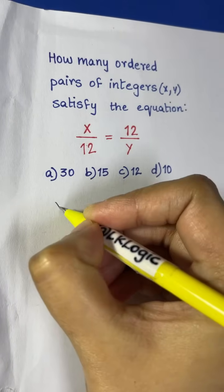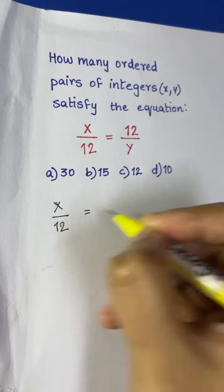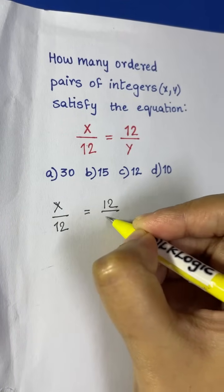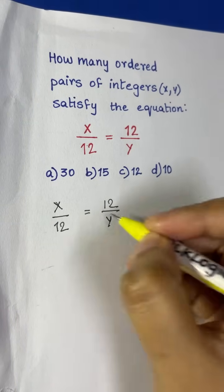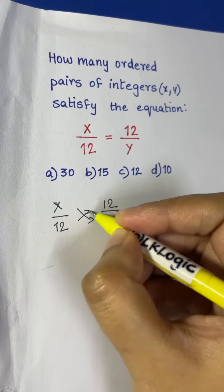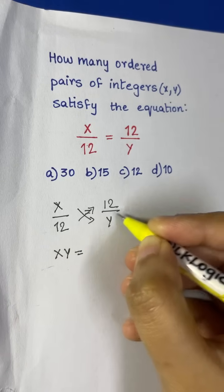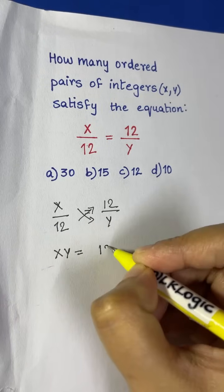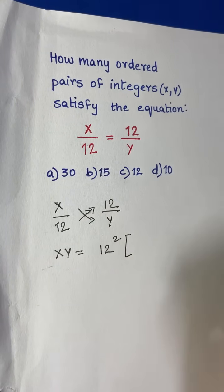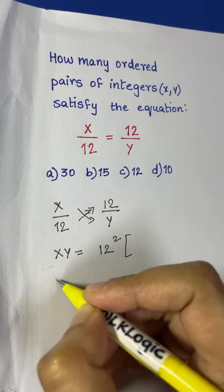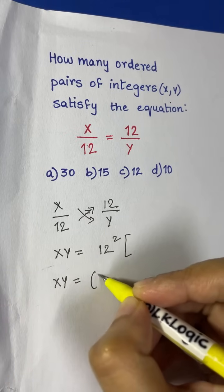Let's write this: x/12 = 12/y. Now that's pretty simple — you would be thinking let's cross-multiply, and you're right. So we get xy = 12 × 12 = 12².